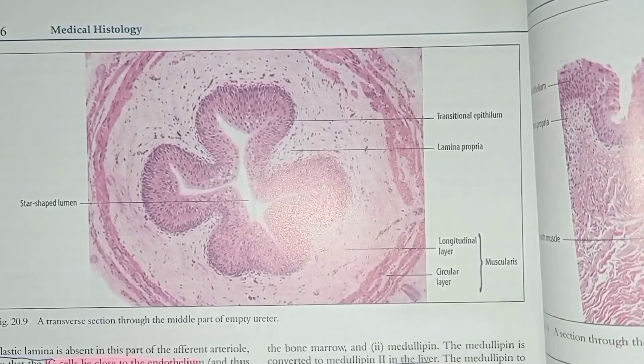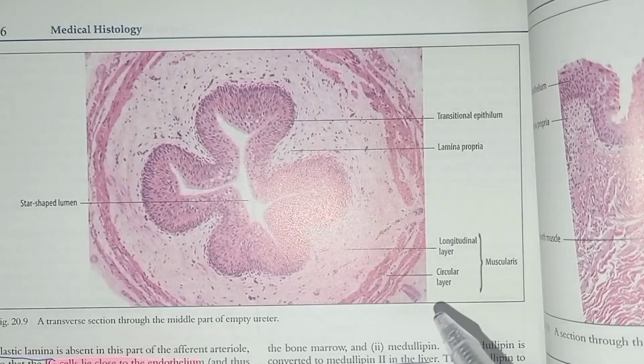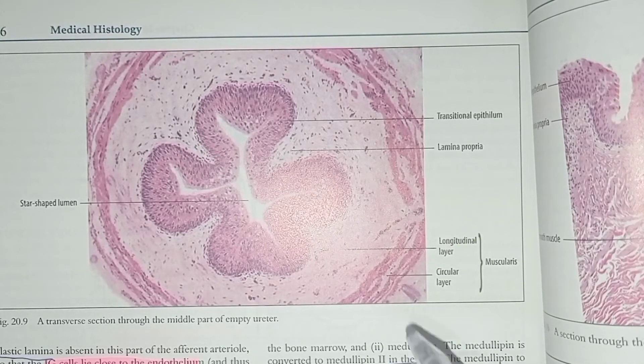Then we have the external layer, which is the adventitia. It consists of loose fibroelastic connective tissue, and contains blood vessels, lymphatics, and nerves.